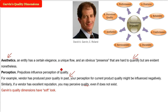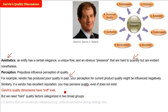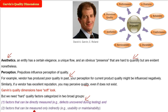So, Garvin's quality dimensions, which you see here, are quite soft — that is, quantifiability is not there. It is just stated and people are accepting it. But we need something hard. We need to categorize these into broad groups — factors in these dimensions which can directly be measured, for example, defects uncovered during testing, and factors that can only be measured indirectly. This is the hard approach, as opposed to the soft approach of all the dimensions Garvin has given.